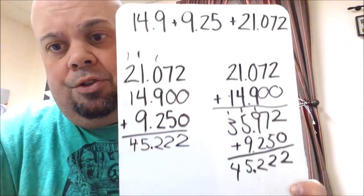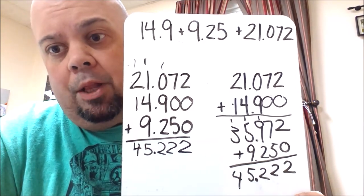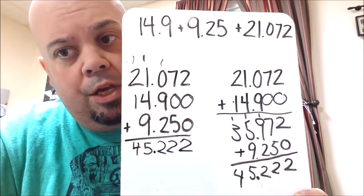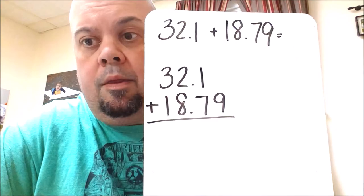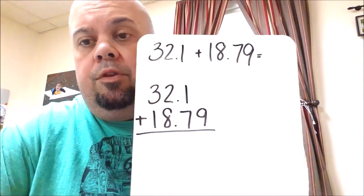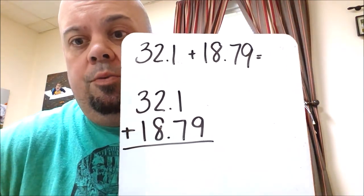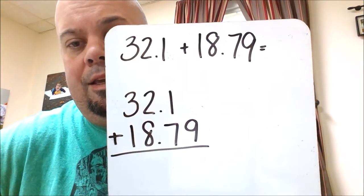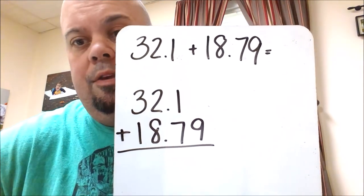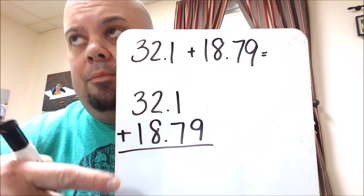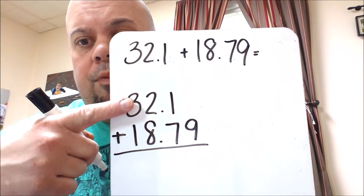So now let's try one more example from your problems down below. And that would be... So the next problem you have is 32 and 1 tenth plus 18 and 79 hundredths. Again we're going to stack them vertically.